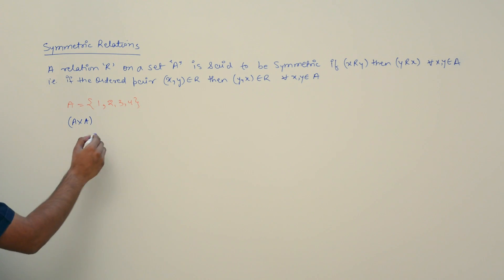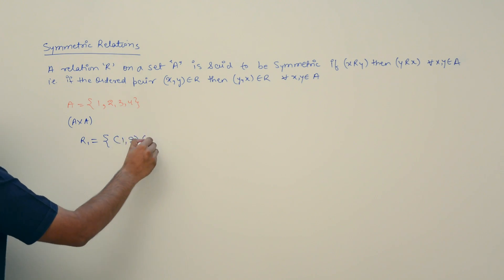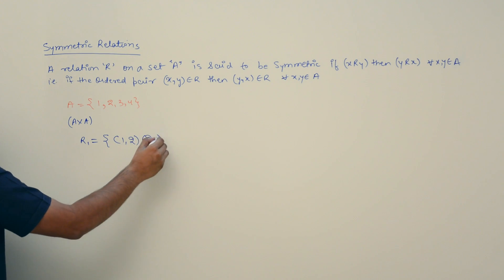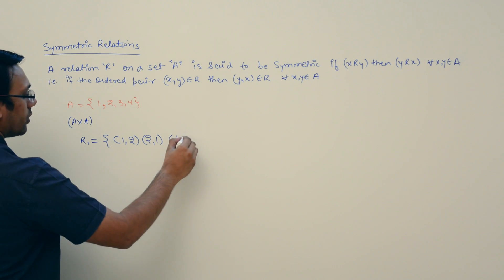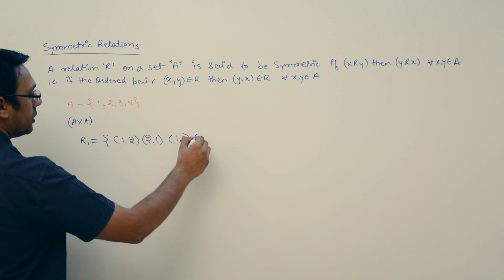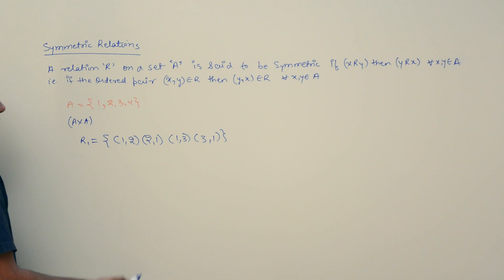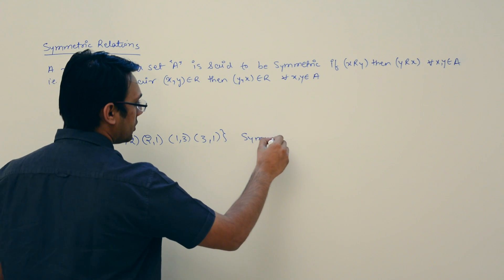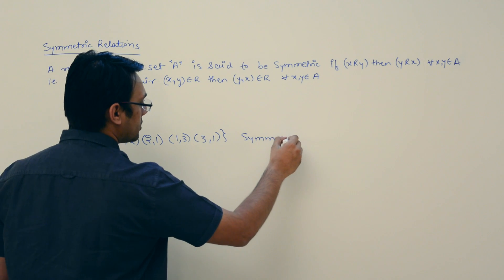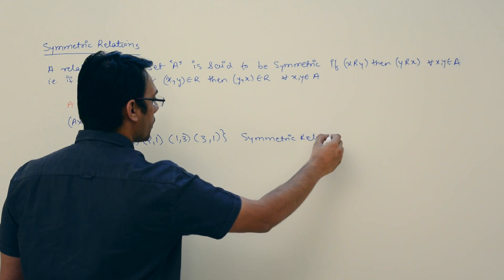That means if the relation contains (1, 2), then for it to be symmetric, (2, 1) should also be there. In the same way, if the relation contains (1, 3), then (3, 1) should also be there. So this relation is a symmetric relation.